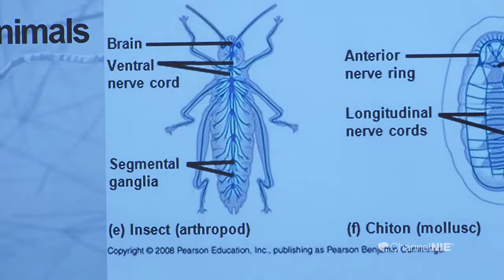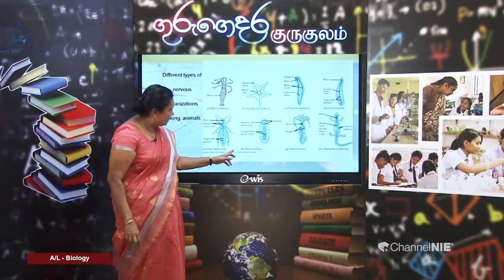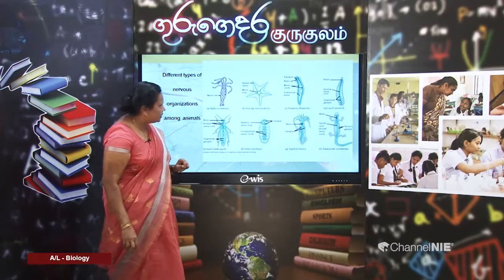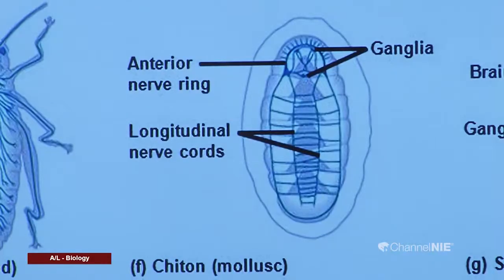In addition to photoreceptors, arthropods also have other receptors in the head region. Moving to chitin and squids — they also have a specific arrangement of the nervous system. Squids in particular have very prominent and clear photoreceptors.